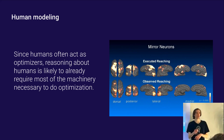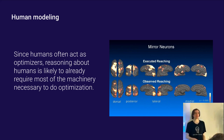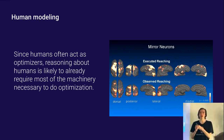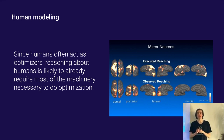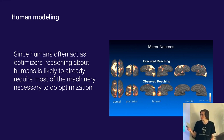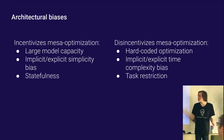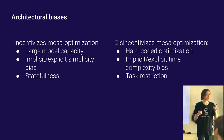Another situation pushing towards mesa-optimization: there are many situations where we train machine learning models to mimic humans, and humans are optimizers. To do a good job mimicking humans, you need to be able to predict what we'll do when we have a goal and are trying to optimize it. Being able to understand — if a human was trying to do X, how would they accomplish X — is pretty important if you want to predict human behavior. So for predicting humans, we should expect our models will at least develop the capability to do optimization.